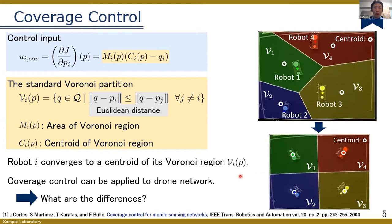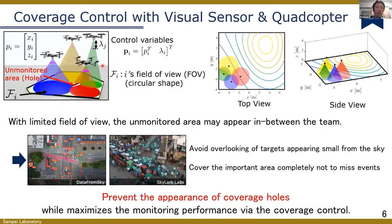This coverage control can be applied to drone networks, but of course there are several differences. In the next slide, we will explain the differences while introducing the scenario and challenges. We consider the scenario where a team of drones equipped with downward-facing cameras monitors the environment. The control variables are the robot position p_i and the camera's focal length, which corresponds to the zoom level. One of the most significant differences is that the camera mounted on the drone only has a limited sensing field, as you can see in this figure.